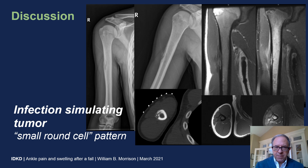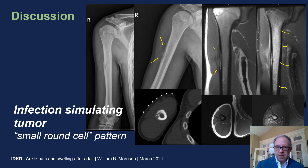Infection can also simulate tumor and vice versa, leading to a small round cell pattern. In this case of a young patient with pain at the upper arm, we see an aggressive-looking lesion at the lateral aspect of the mid-humerus. On MRI, we see destruction of the cortex and ill-defined bone marrow edema within the humeral shaft. This turned out to be Staph aureus, but could have simulated a tumor.